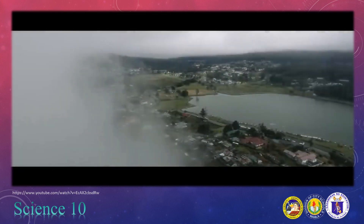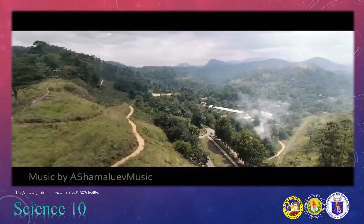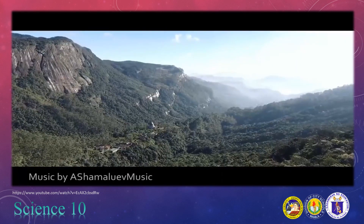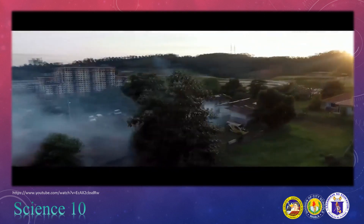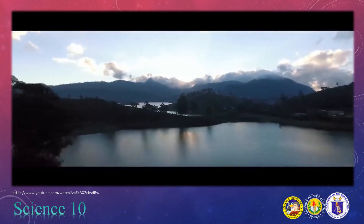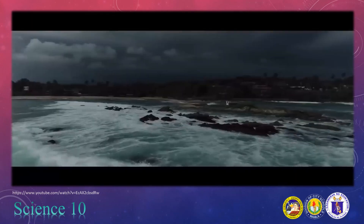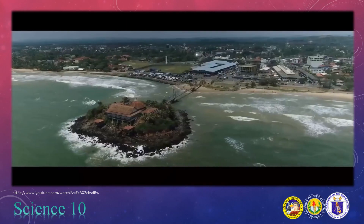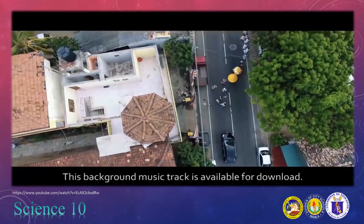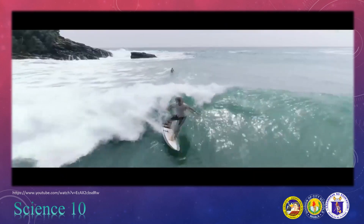The Earth's lithosphere is divided into two: the oceanic lithosphere, which is found under the ocean, and the continental lithosphere, which is found under the continents. The oceanic lithosphere, also called the oceanic crust, consists mainly of mafic crust rich in magnesium and iron, and ultramafic mantle that is over 90% mafic. It thickens as it ages and moves away from the mid-ocean ridge. The continental lithosphere, also called the continental crust, is a layer of igneous sedimentary rock that forms the continents and the continental shelves, consisting mostly of granitic rock.